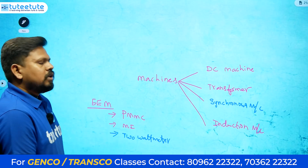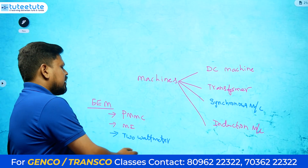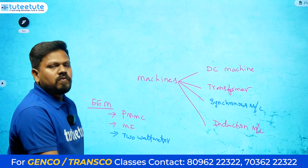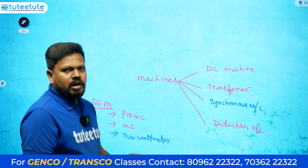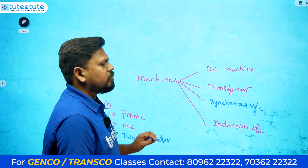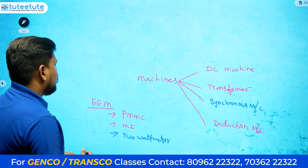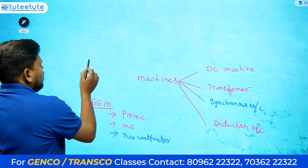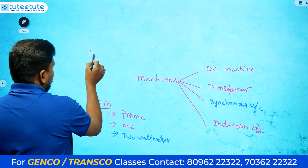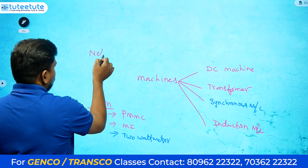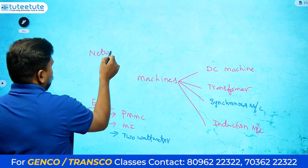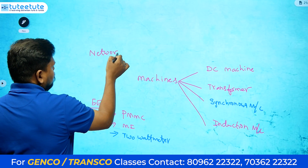Electronic measurements like digital voltmeters and CRO are also there, but questions from those topics are unlikely. The concepts mentioned — PMMC, moving iron, and two-wattmeter method — are the ones they will definitely be giving questions on.